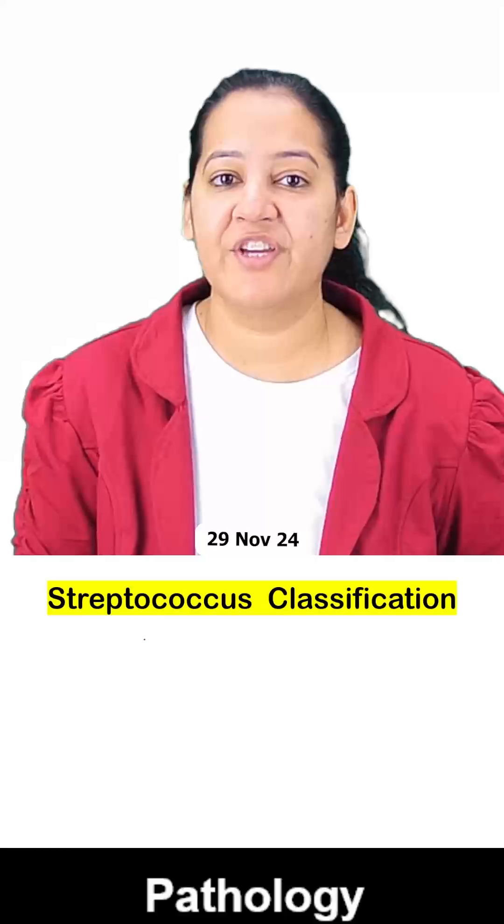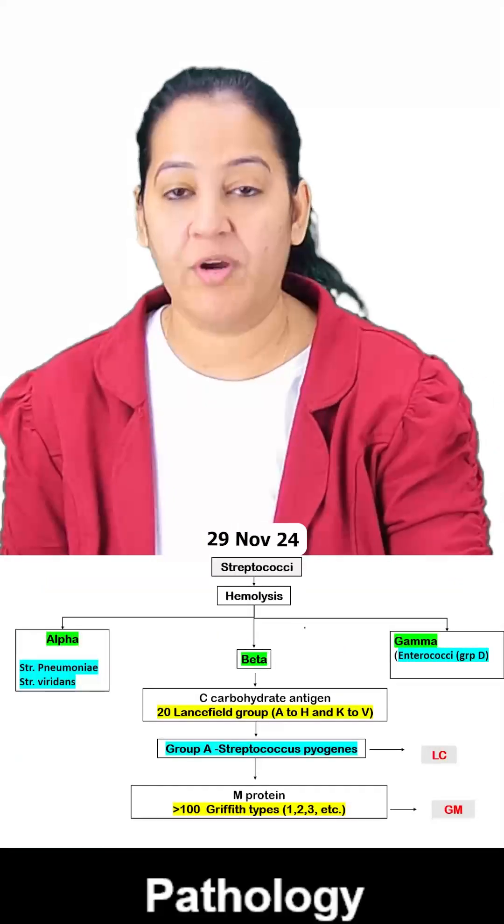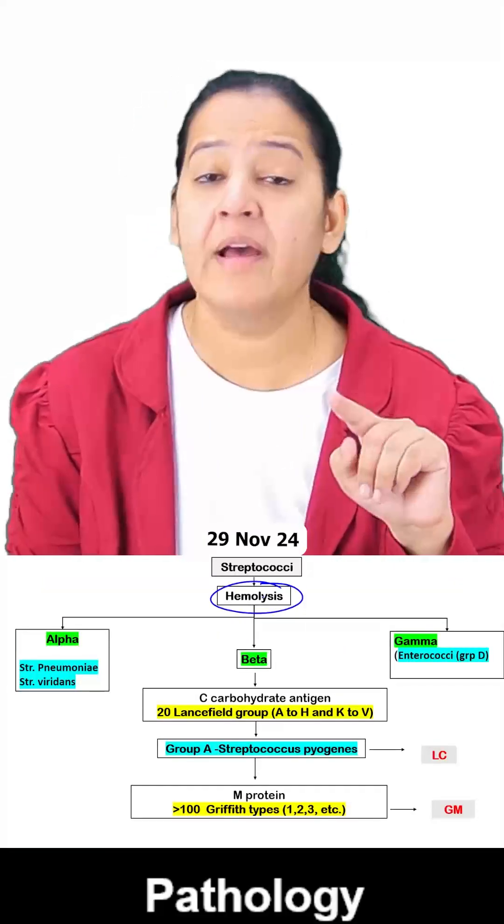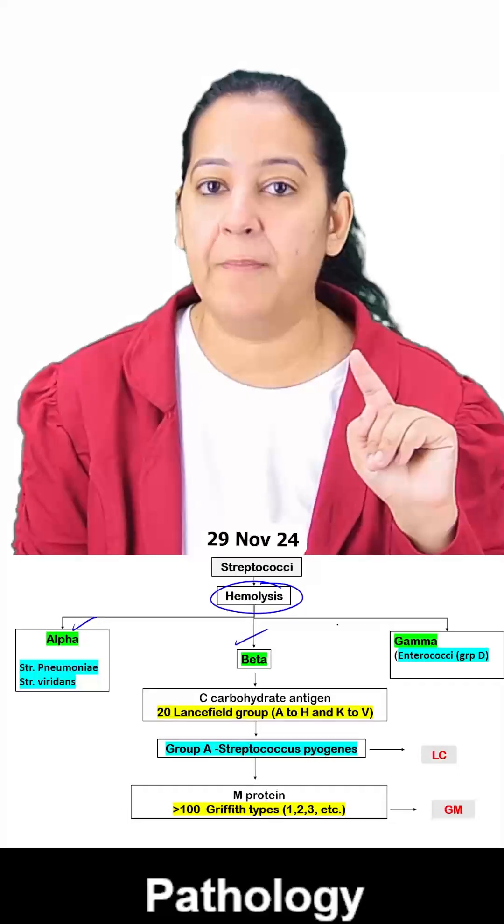Hello everyone. Here I am telling you the classification of Streptococcus. We classify Streptococcus based on hemolytic activity on blood agar. There are three types: alpha, beta, and gamma hemolytic.